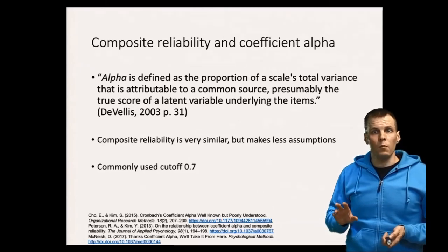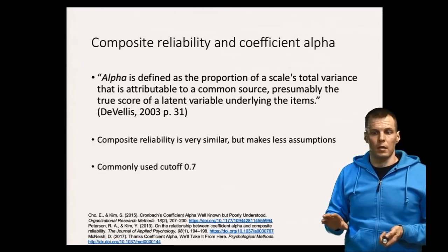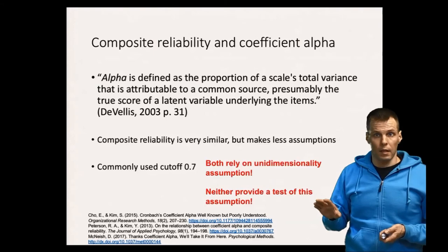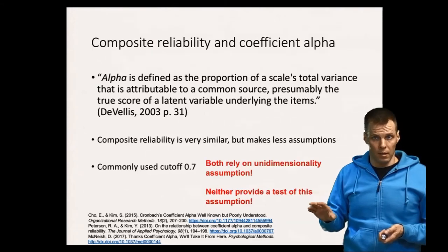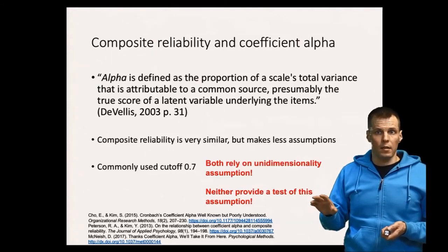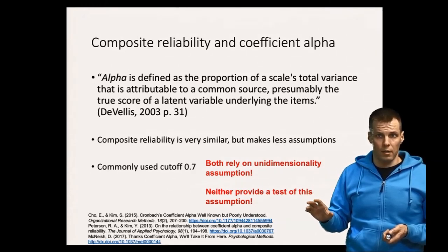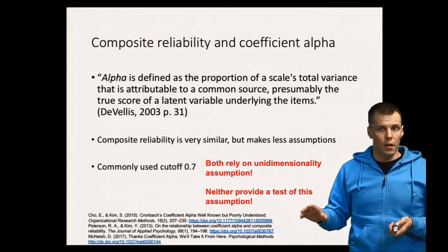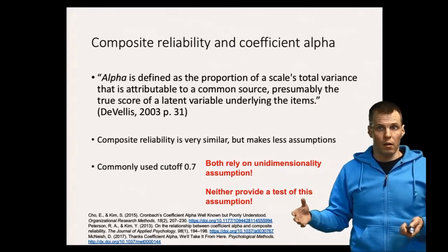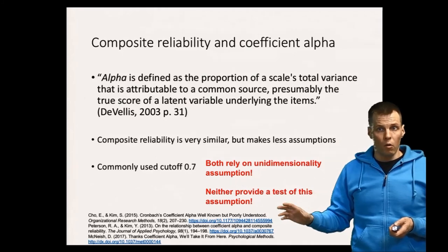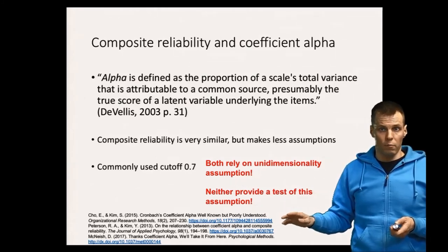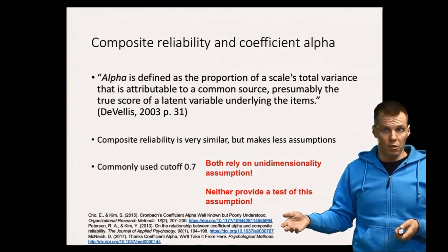One key weakness shared by both composite reliability and alpha is that they both rely on unidimensionality assumptions. If your scale has multiple dimensions — for example, there are cross-loadings or you cannot justify the unidimensionality assumption — then there are other indices that are better than composite reliability. Also, calculating composite reliability does not itself provide evidence of dimensionality; you have to check that from your factor analysis.